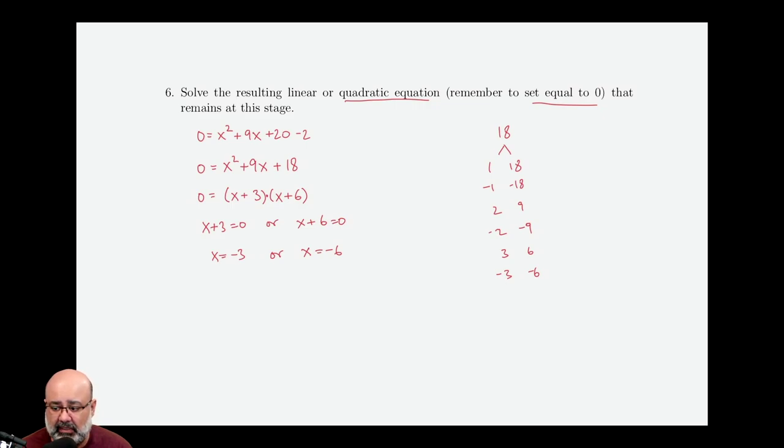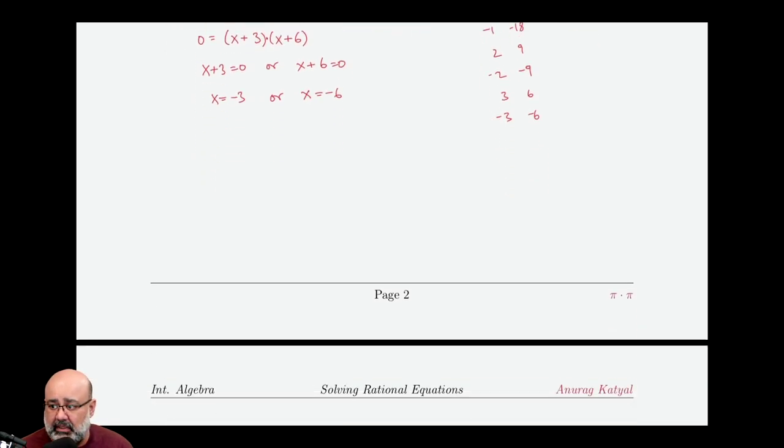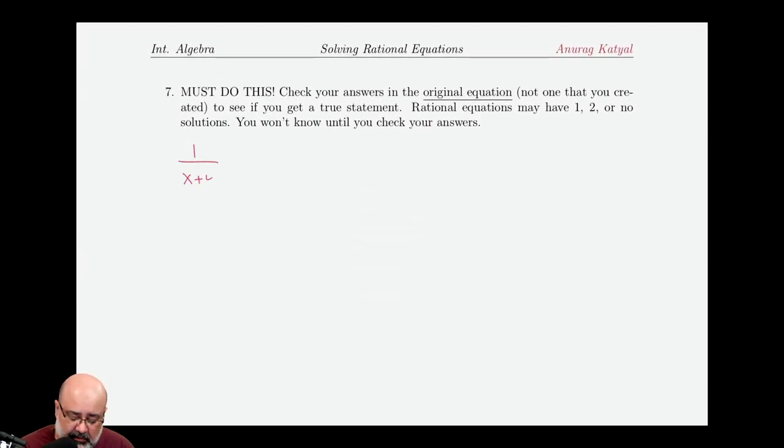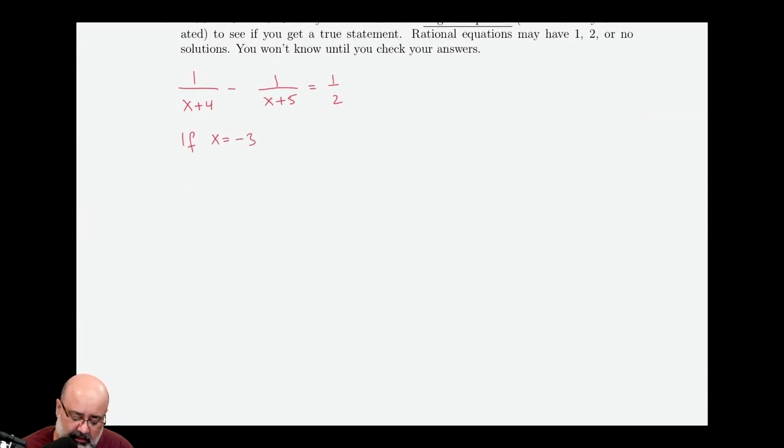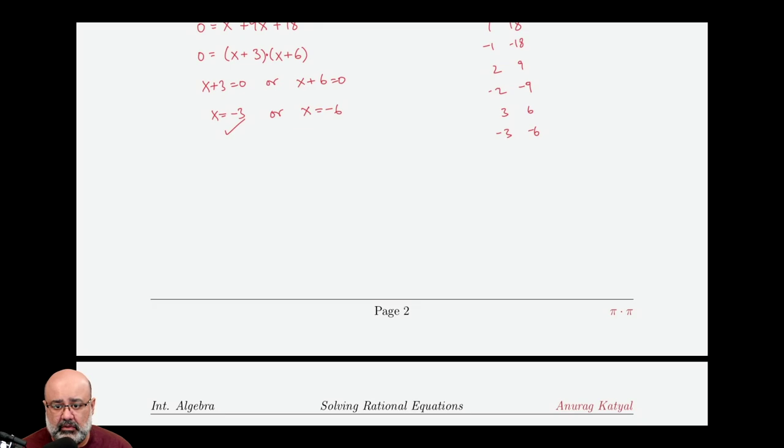In order to verify if they're solutions or not, we have to plug them into the original equation, which is 1 over x plus 4 minus 1 over x plus 5 equals 1 over 2x. So if x equals negative 3, we get 1 over negative 3 plus 4 is 1, minus 1 over negative 3 plus 5 is 2, equals 1 over 2 times negative 3. And this is just 1 minus 1 half equals 1 half. I already know this is true because if I have a whole pizza and I eat half of it, I have half a pizza left. So this is a true statement, which means x equals negative 3 is indeed a solution to the equation.